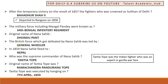In 1857, Nana Sahib fled to Nepal. Who was the supreme commander of Nana Sahib? It was Tantia Tope. The original name of Tantia Tope was Ramachandra Pandurang Topi.